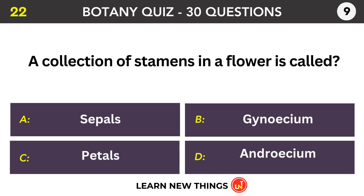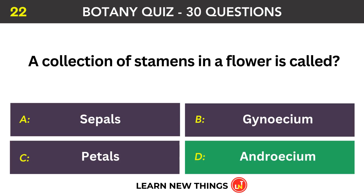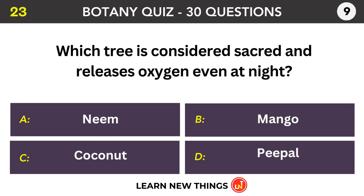A collection of stamens in a flower is called the androecium. Which tree is considered sacred and releases oxygen even at night?